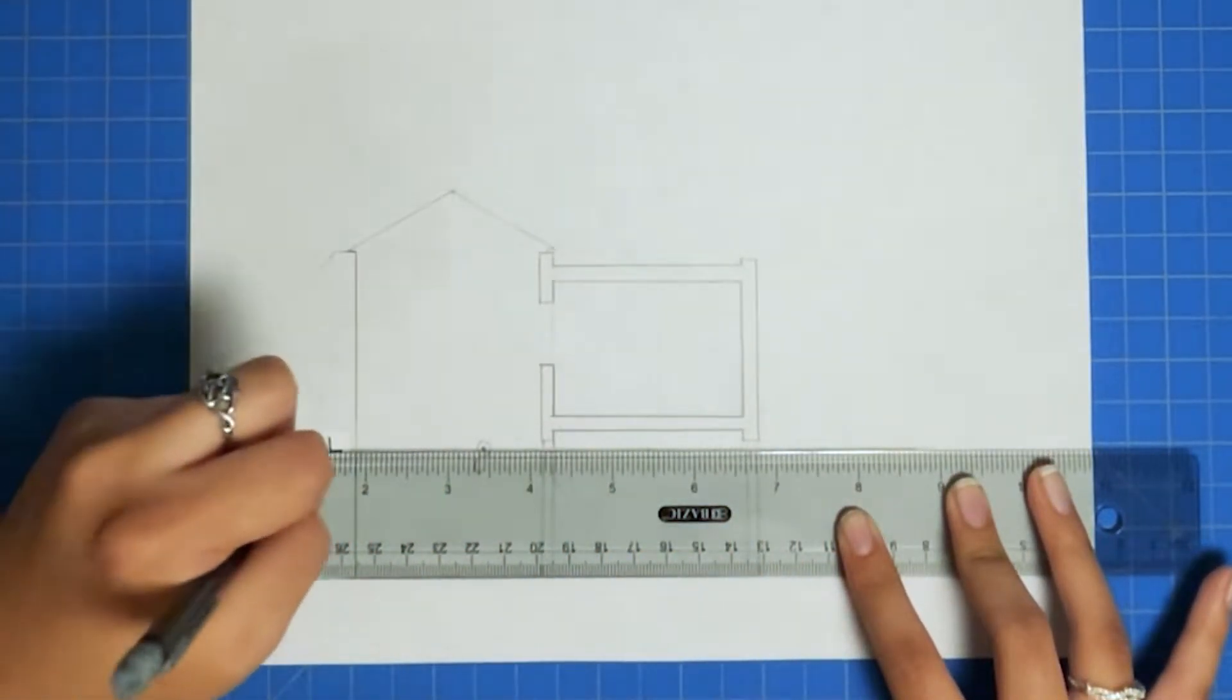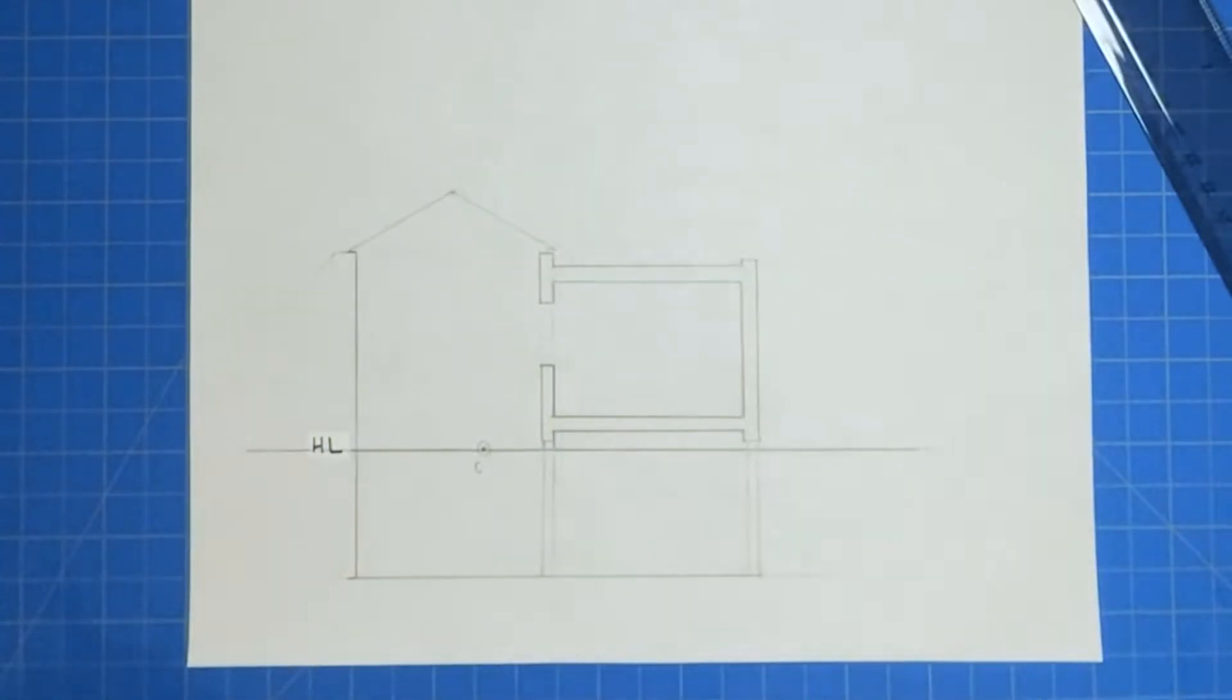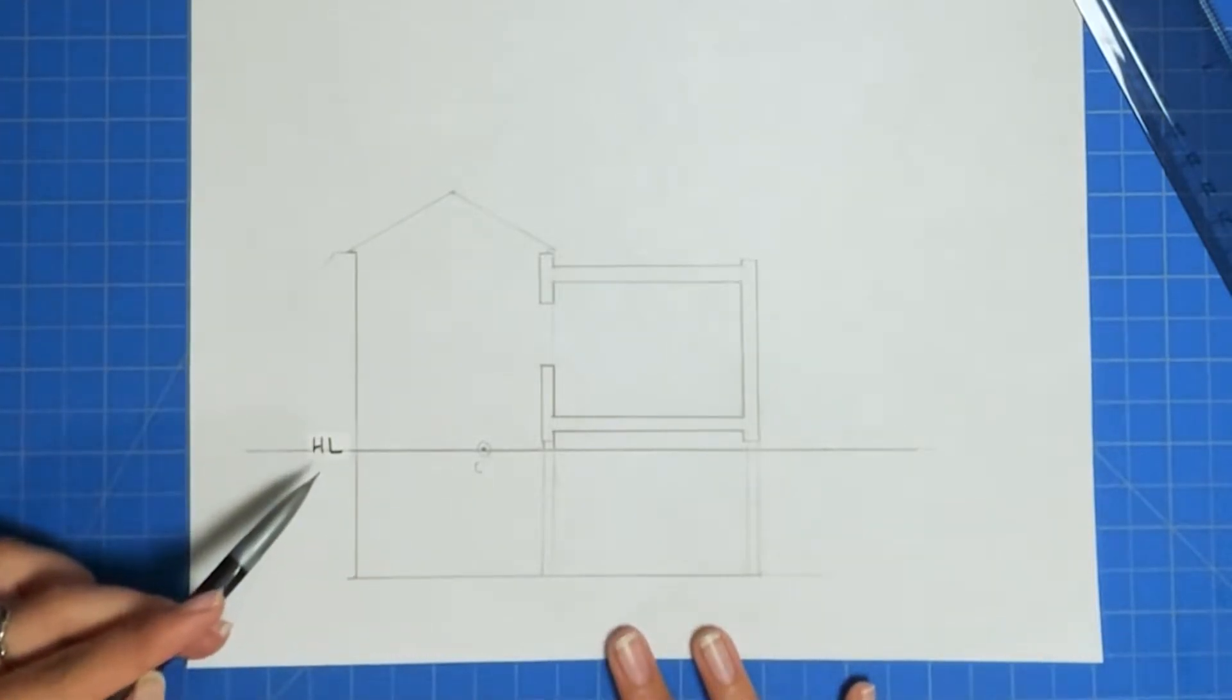Next you need to develop where your diagonal point is for your 45 degree lines. So it can be on either the right or the left. You really only need one when drawing one-point perspective drawings.